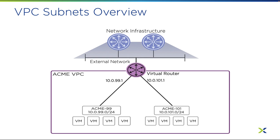External subnets are just that — subnets outside of the VPC. An external subnet provides connectivity into and out of a VPC and can be used by multiple VPCs simultaneously.